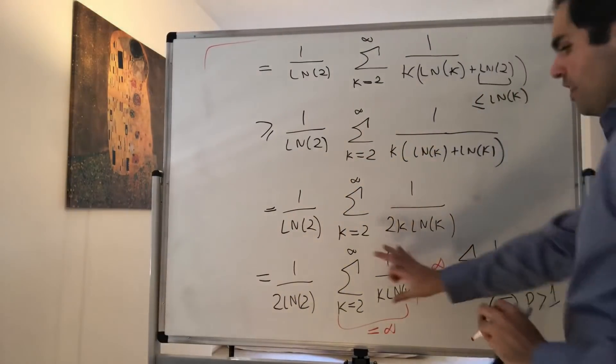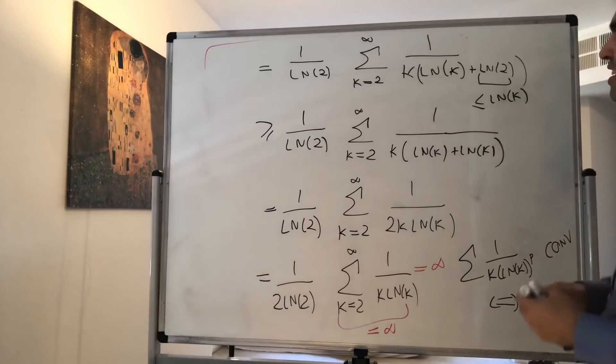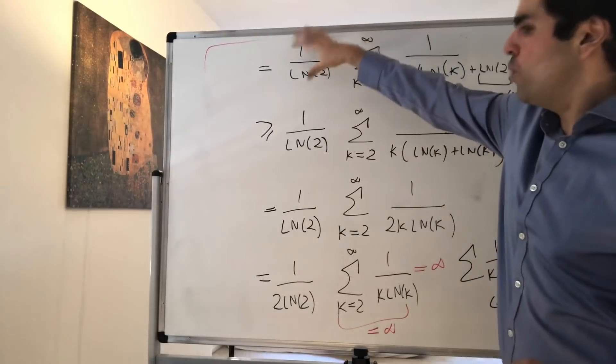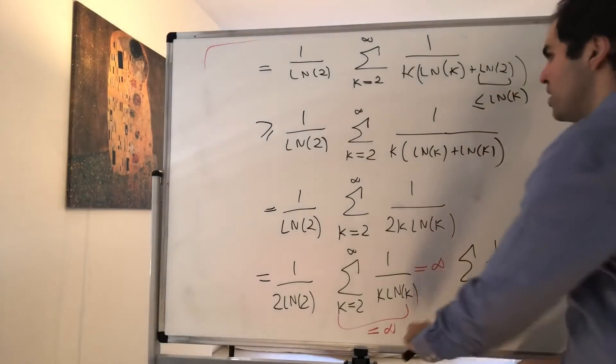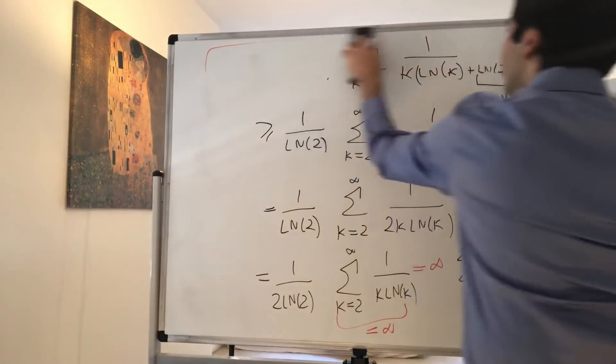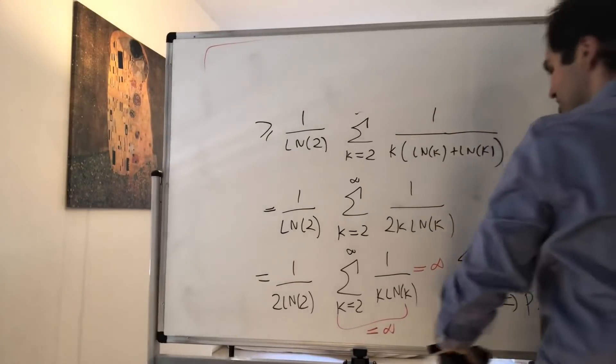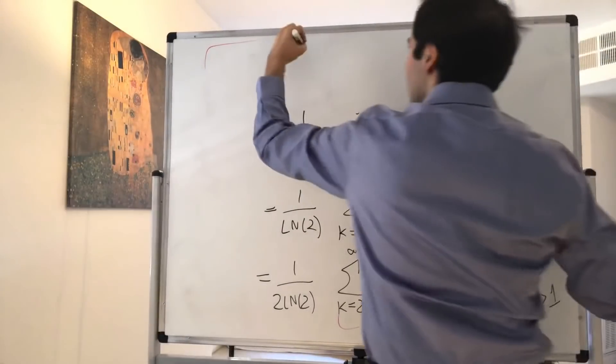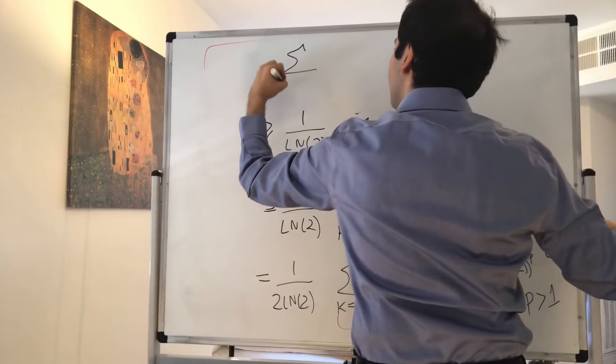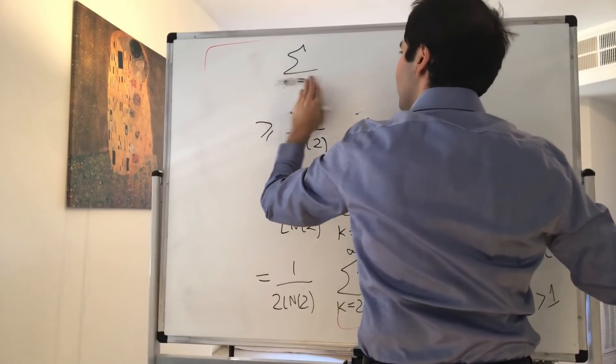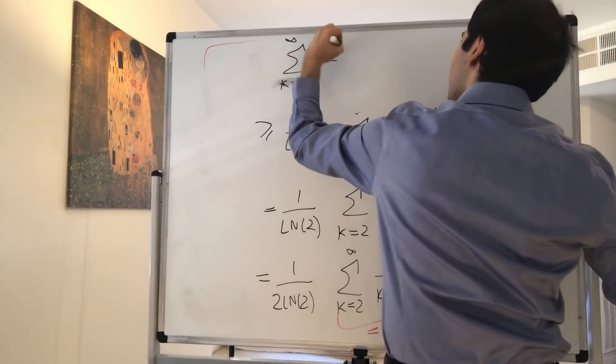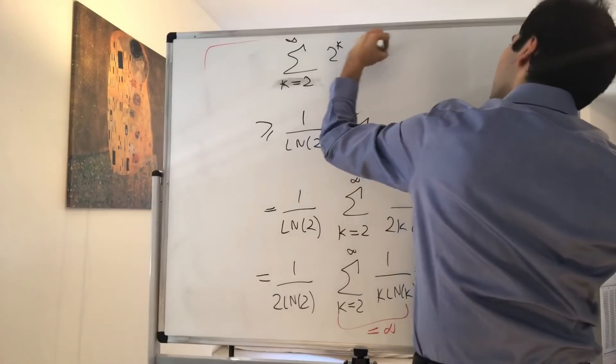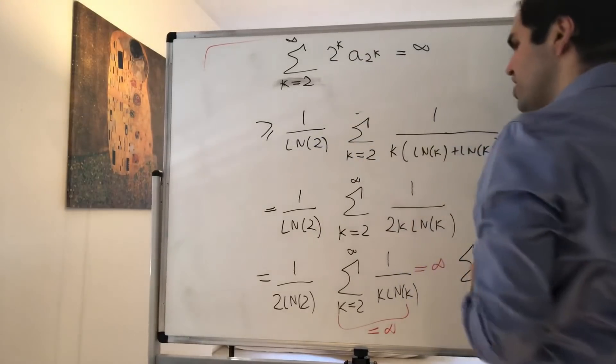Therefore, this series equals infinity, but the original one we had is bigger than this series. Therefore, the original one also goes to infinity. So in conclusion, we get that the sum from n equals, I guess, at least the sum from k equals 2 to infinity of 2^k a_{2^k} diverges.